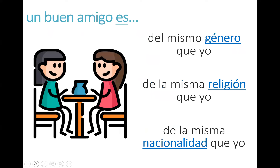This time we're going to use un buen amigo es — a good friend is. Can you try these sentences after me? Un buen amigo es del mismo género que yo, de la misma religión que yo, de la misma nacionalidad que yo. What do you think the underlined words mean? Género, religión, nacionalidad. A good friend is of the same gender as me, of the same religion as me, of the same nationality as me.